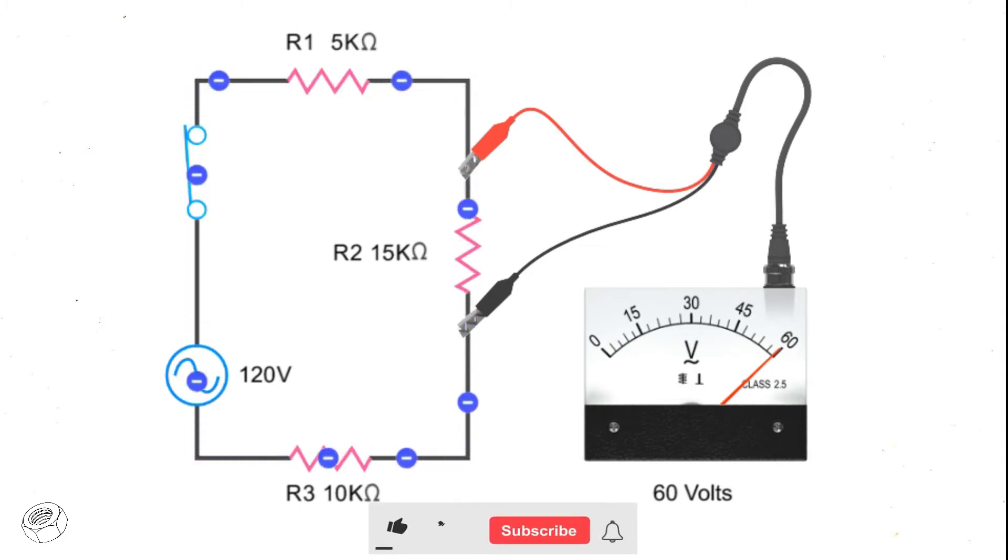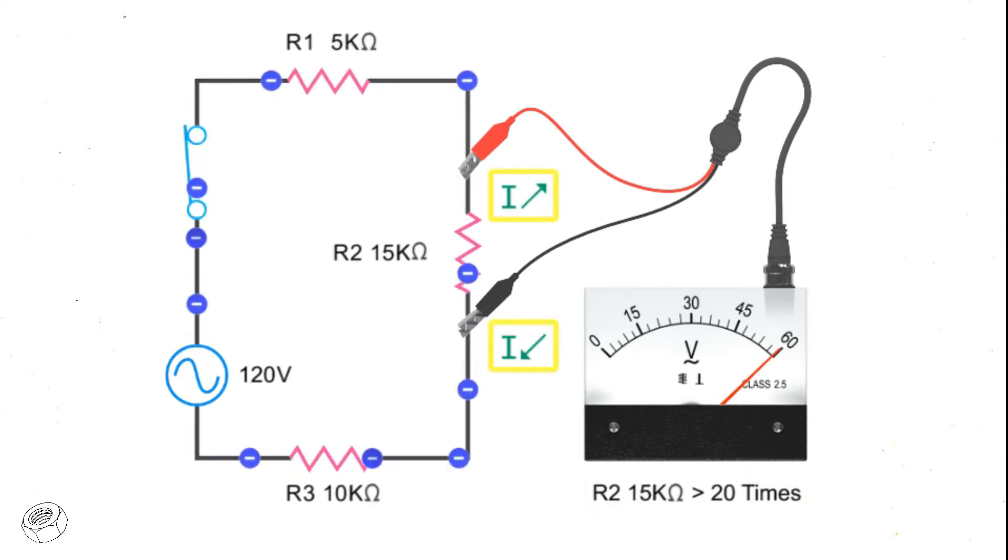If the voltmeter's internal resistance is less than 20 times the component's resistance, current will flow out of the circuit into the meter, resulting in an inaccurate voltage reading.